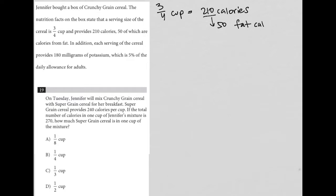In addition, each serving of the cereal provides 180 milligrams of potassium, which is 5% of the daily allowance for adults. So that 180 milligrams is just 5% of daily allowance. Okay, so that kind of covers all the preliminary information. So let's jump into the question now.